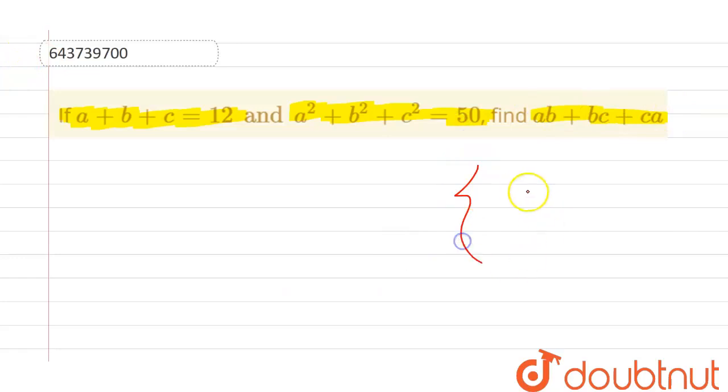So now first of all we should know the formula of x plus y plus z the whole square, which is equal to x squared plus y squared plus z squared plus 2 into x into y plus 2 into y into z plus 2 into z into x.